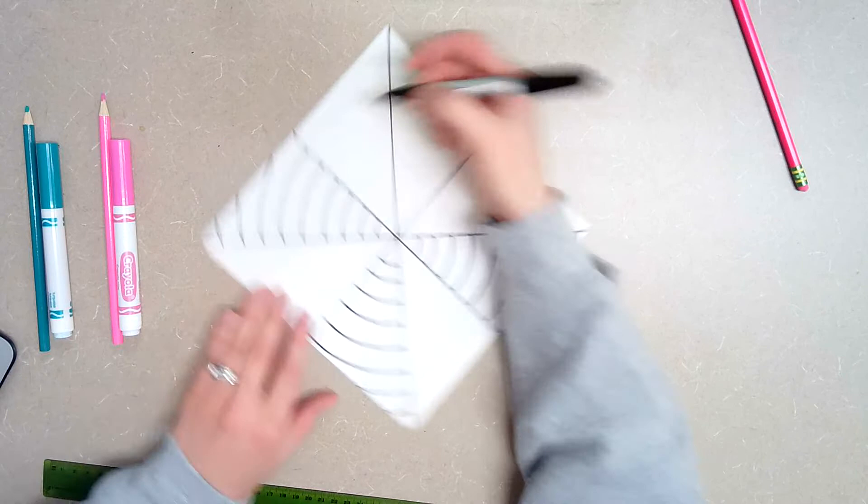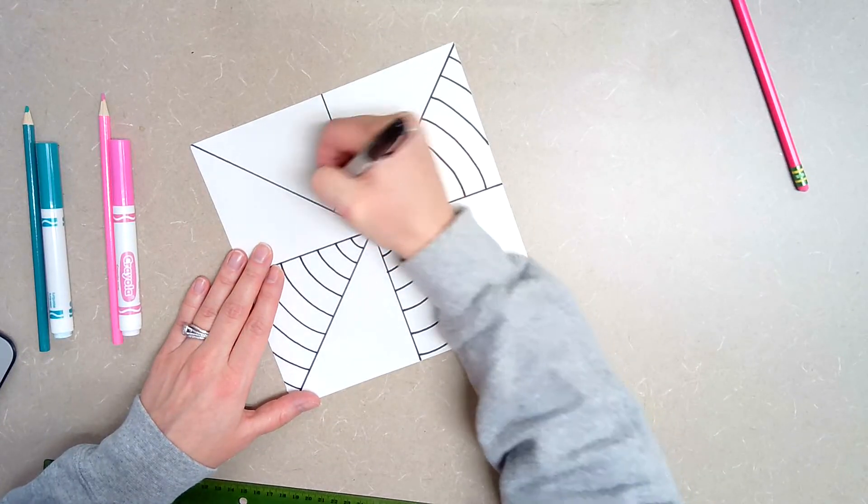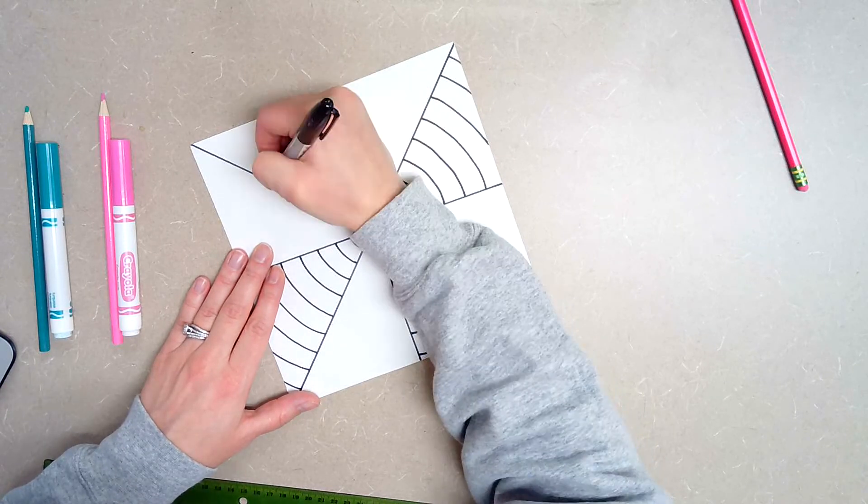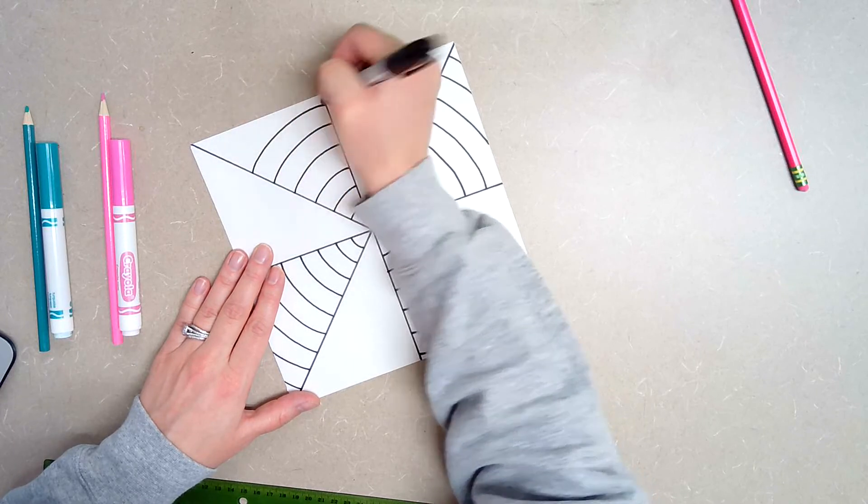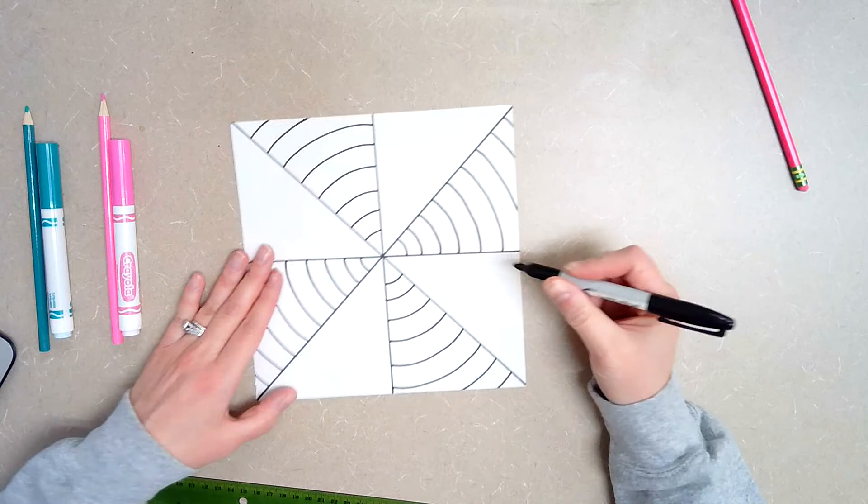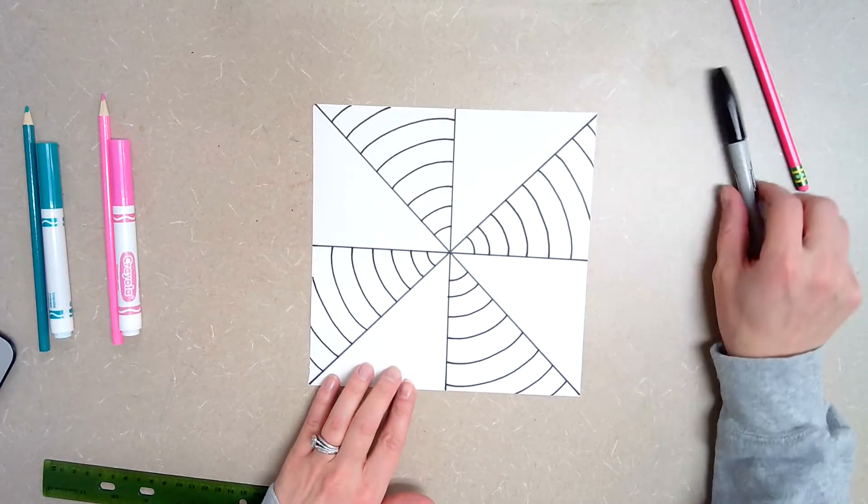Do a nice, neat job. There we go. Then skip. Go to my next one. All right. Once you have that done, then you can put your pencil away and then you can trace that with a black marker.